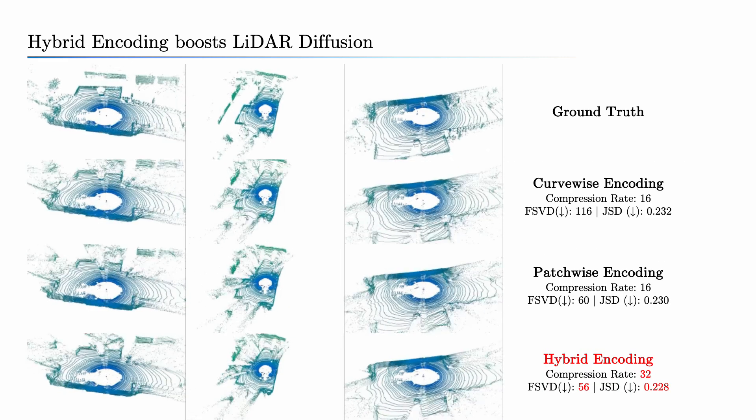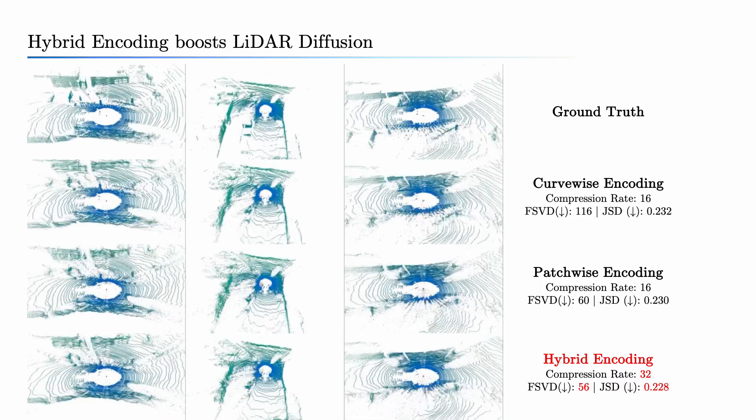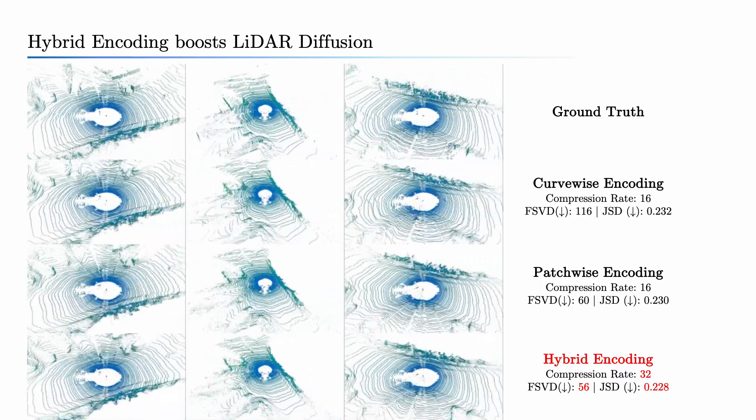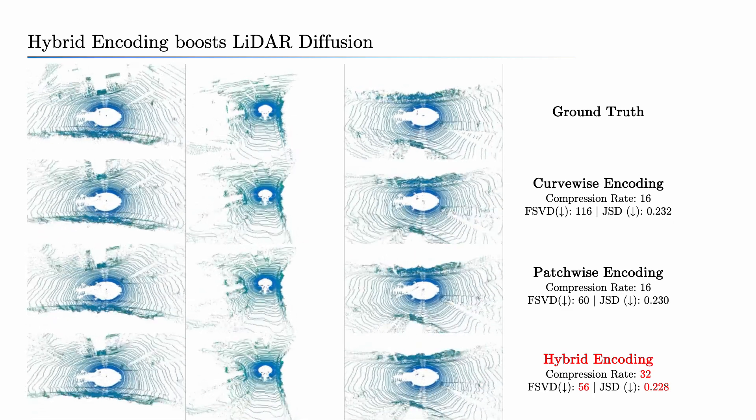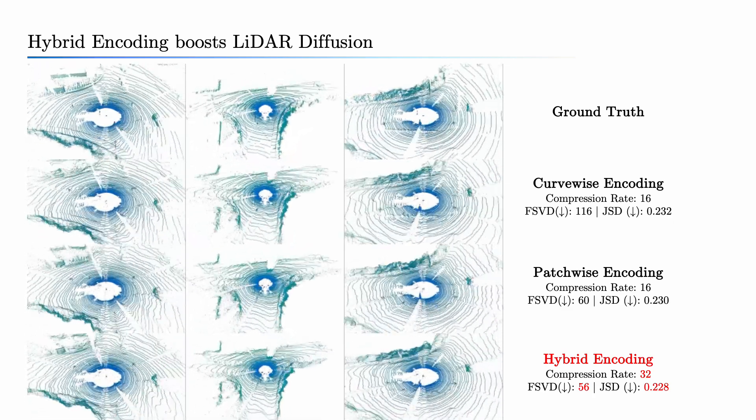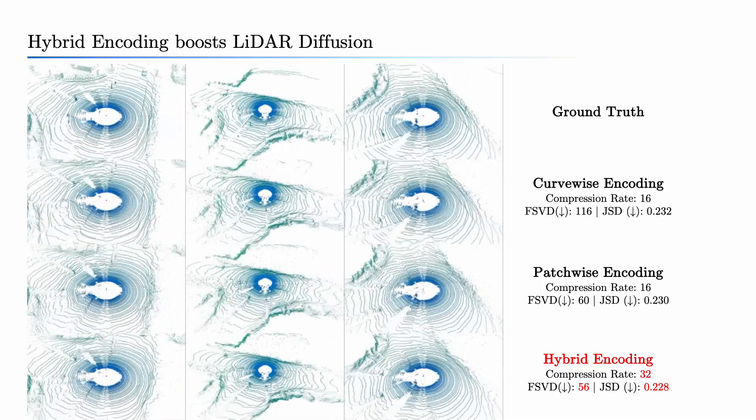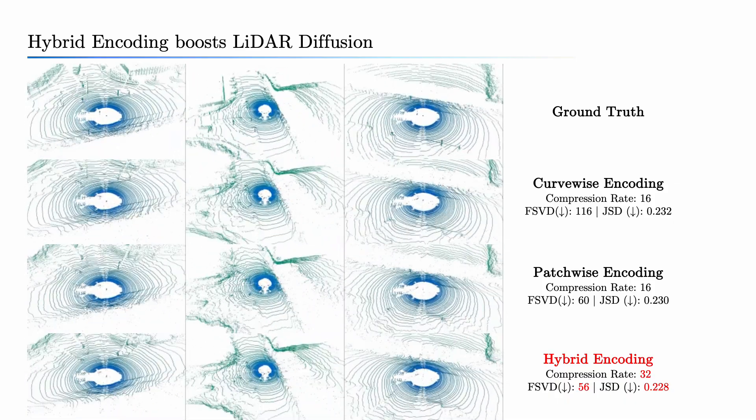Hybrid encoding enhances qualitative performance reconstruction, as shown on the left. Additionally, by achieving a higher compression rate, hybrid encoding improves the synthesis quality of LiDAR diffusion.